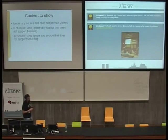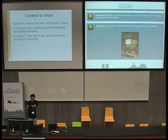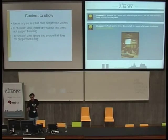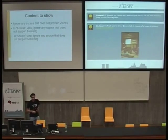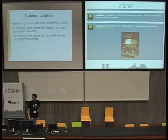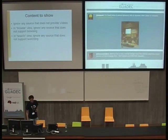So if I'm implementing the Browse view, I check whether each source handles browse — if not, I ignore it. In the case of search, I do the same: I check whether the source provides search. If yes, I will use it in my application.